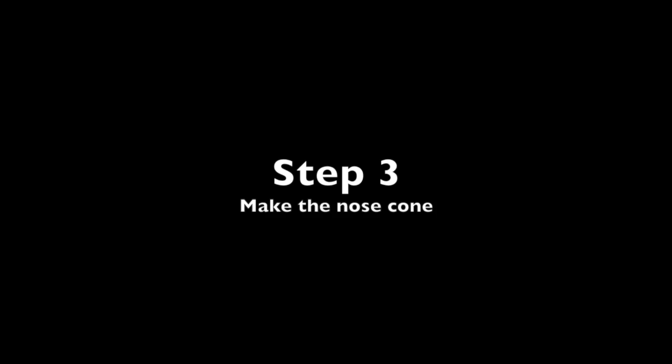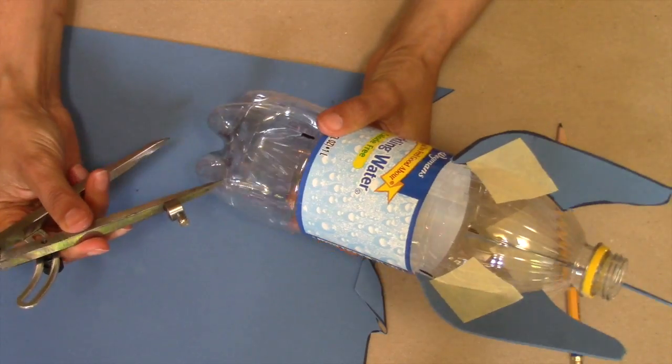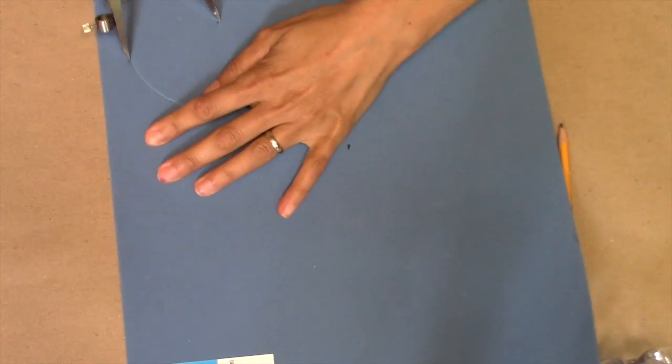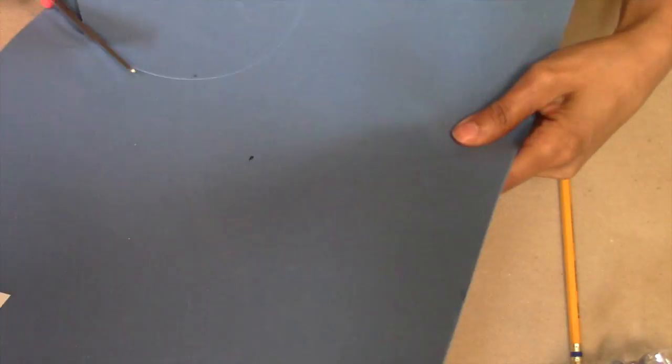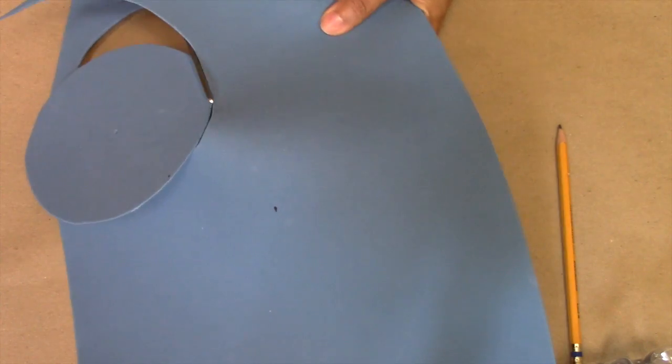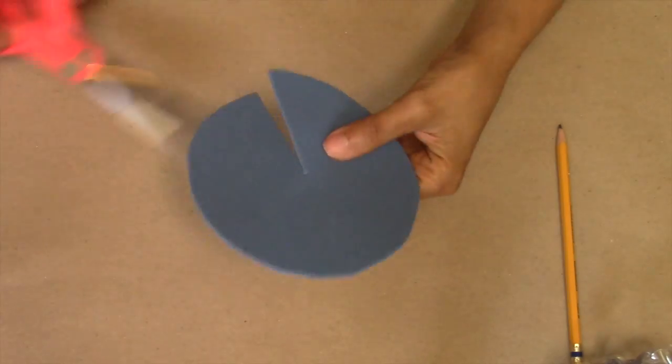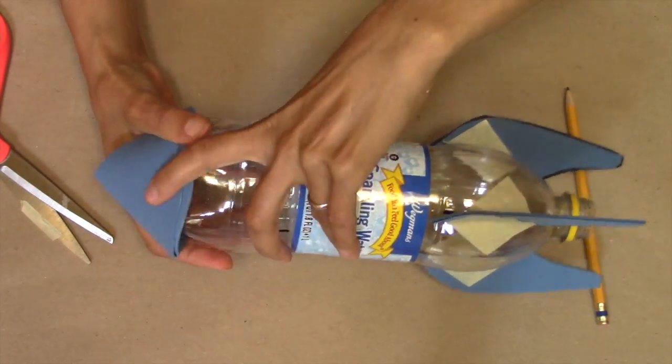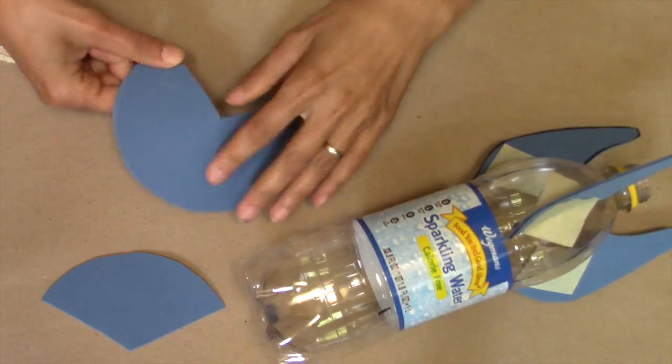The procedure to make the nose cone is exactly the same as before, except this time I'm making it from craft foam. The circle will be a little larger than the one I drew for the paper rocket, because the bottle has a larger diameter. Just like the last time, you'll need to cut out the circle, add a slit to the center, then form the cone and adjust the size until you're happy with it.